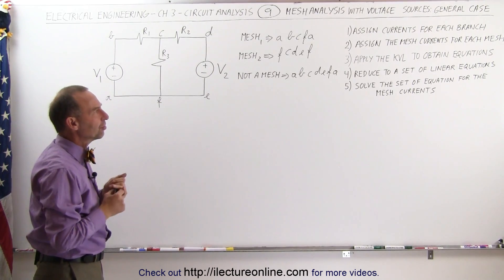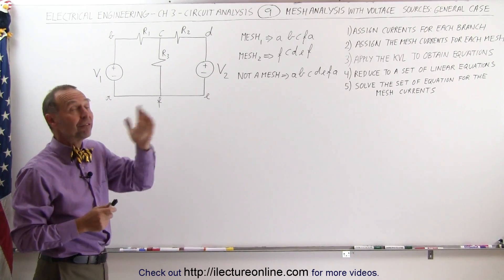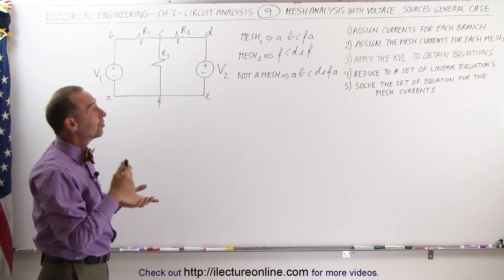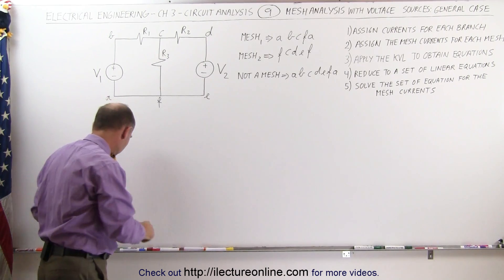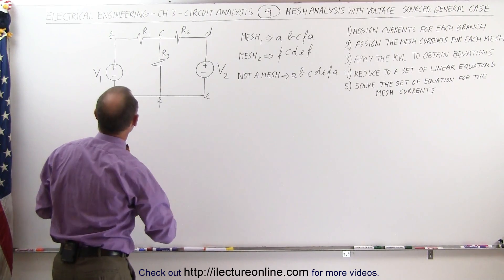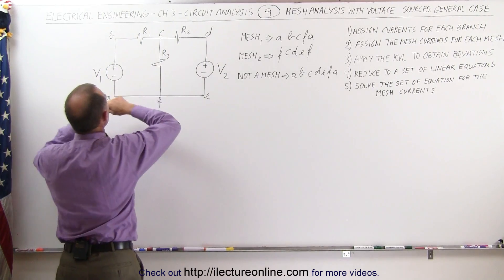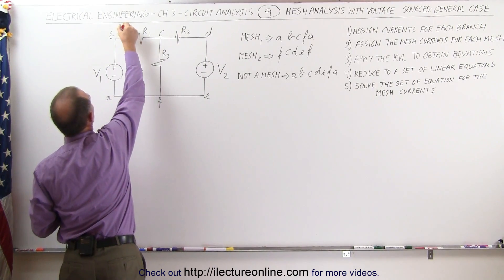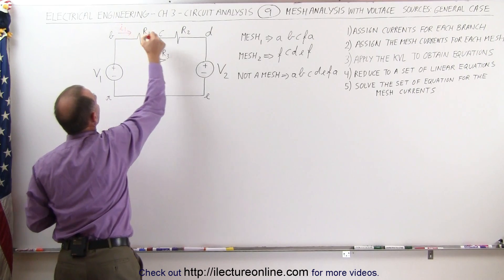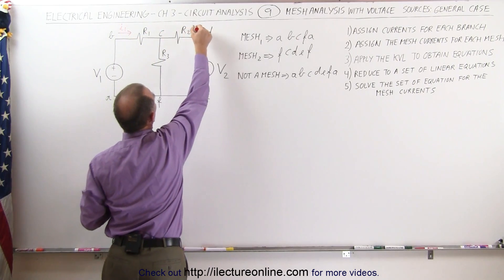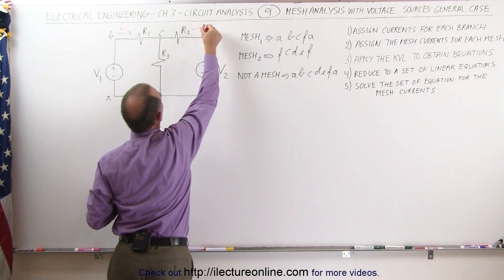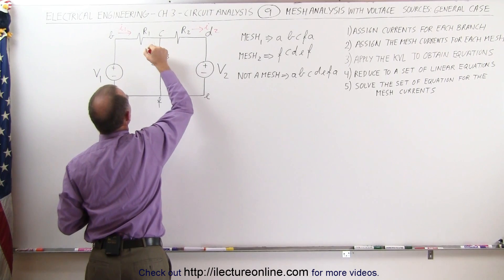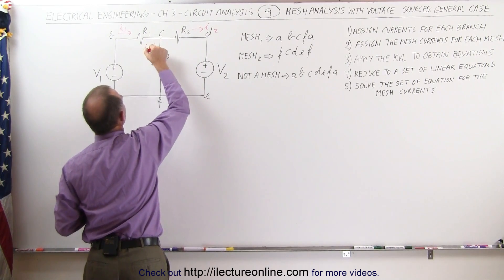Now that we know what a mesh is, let's follow the steps. First, assign currents for each of the branches. We have current I1 in the first branch, current I2 in the second branch, and current I3 in the third branch.